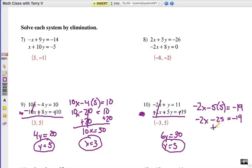Add 25 to each side. And I'm going to get negative 2x equals 6. And x would be a negative 3.